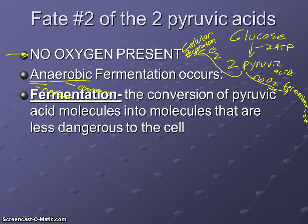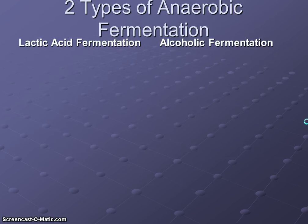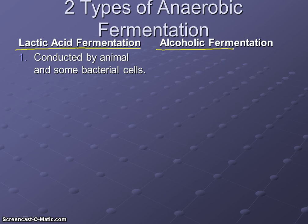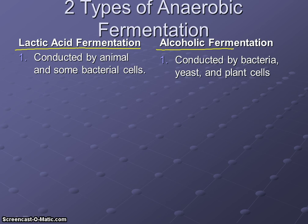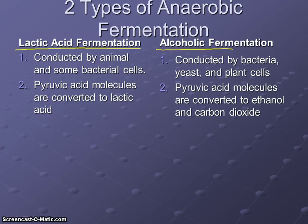There are two kinds of anaerobic fermentation: lactic acid fermentation and alcoholic fermentation. Lactic acid fermentation makes lactic acid and is conducted by animal cells and some bacterial cells. Alcoholic fermentation makes ethanol and is conducted by bacteria, yeast cells, and plant cells. In lactic acid fermentation, the pyruvic acid molecules are converted into lactic acid. In alcoholic fermentation, those two pyruvic acid molecules are converted into ethanol — a type of alcohol — and carbon dioxide.